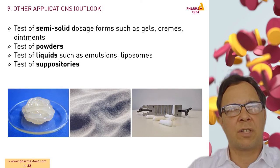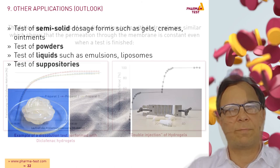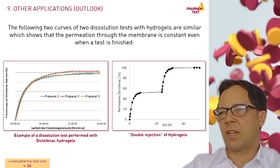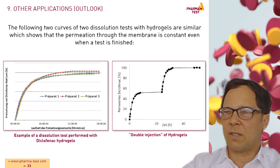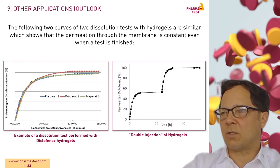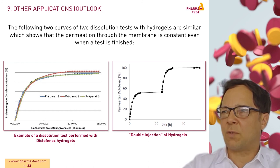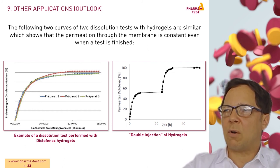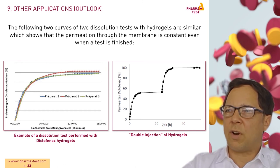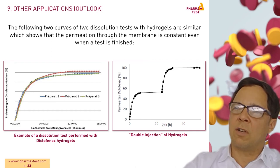Next steps are to widen the type of application. Test results of semi-solid dosage forms are already promising. Next steps would be the dissolution tests with powders, liquids and suppositories. On this slide we see an example for the dissolution test which was performed with a dispersion releaser and diclofenac shields. We see here three different preparations and they give almost similar dissolution profiles. On the right side we performed a test where we put first 50% of the dosage form into the dispersion releaser and after 20 hours we injected another 50%. The graphs are similar, which means that the membrane transport is not affected over time.